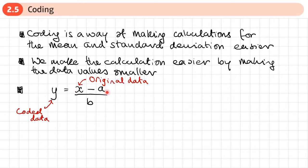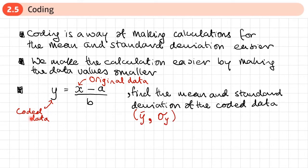The way we do this is by using this formula: we take our original data, subtract a value from it, and divide it by a number to give us what we call our coded data. We then find the mean and standard deviation of the coded data — that would be y-bar and the standard deviation of y.